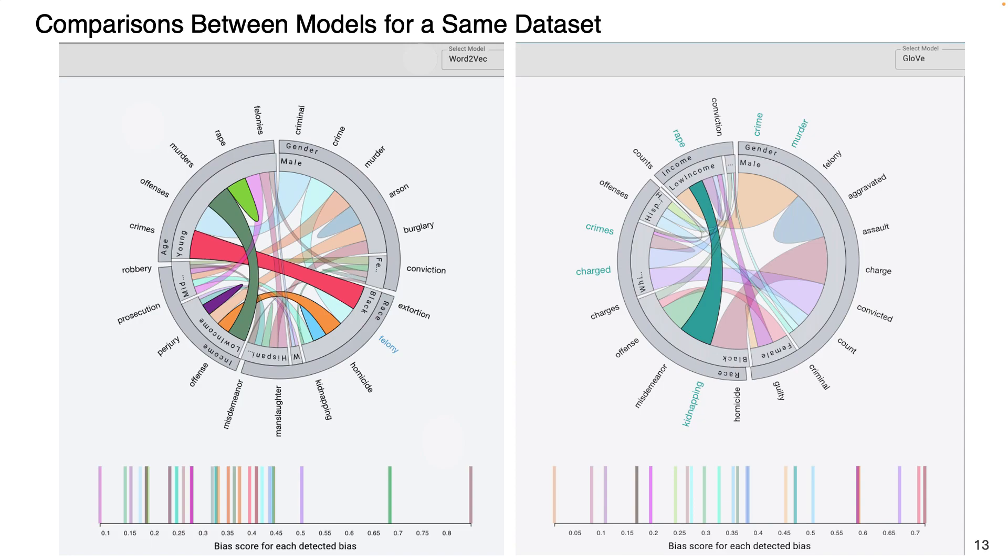If users want to compare and contrast between two models trained on the same dataset, they can use the model selection feature of Style to directly compare the severity and number of detected biases for different models for the same topic. This can help users to select models with fewer or less severe biases in their application.